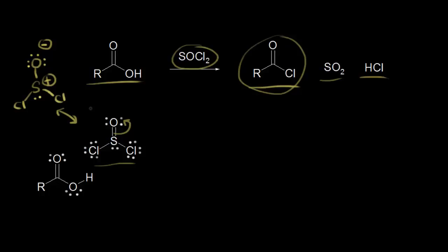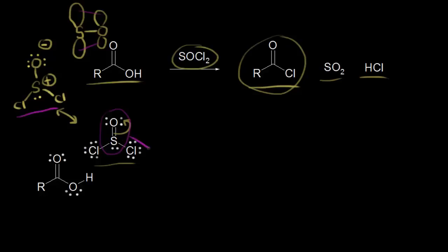Oxygen is more electronegative than sulfur. If you think about this pi bond, there's ineffective overlap of those p orbitals, because sulfur and oxygen are in different periods on the periodic table. Sulfur is in the third period, so it has a larger p orbital than oxygen, which is in the second period. Also, the chlorines are withdrawing electron density from the sulfur, since chlorine is more electronegative. The end result is that this sulfur becomes very electrophilic.